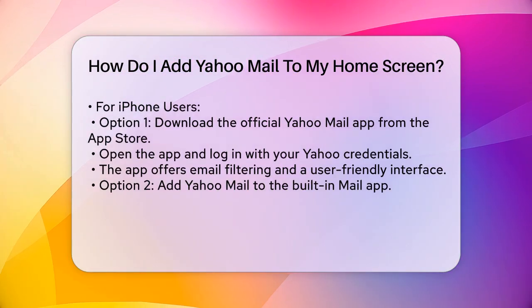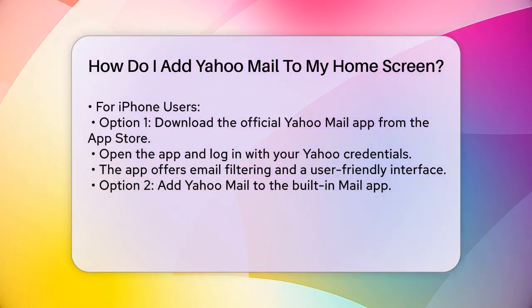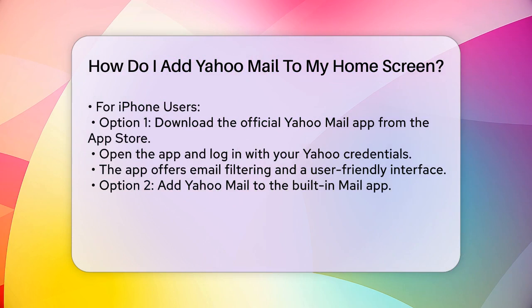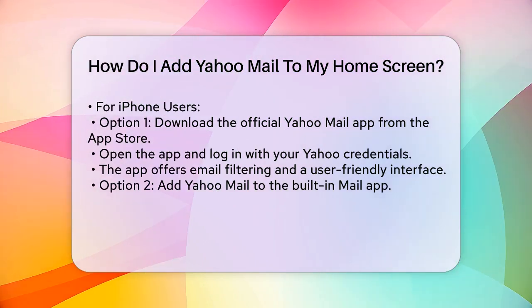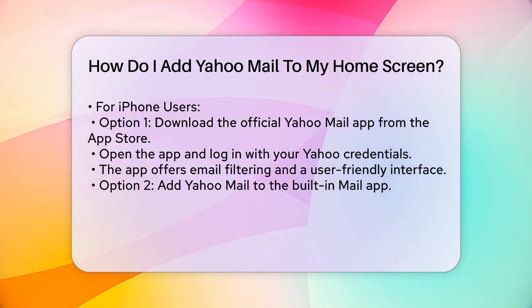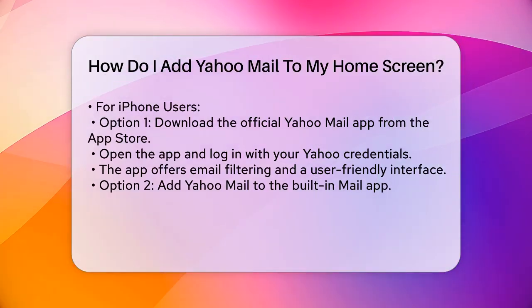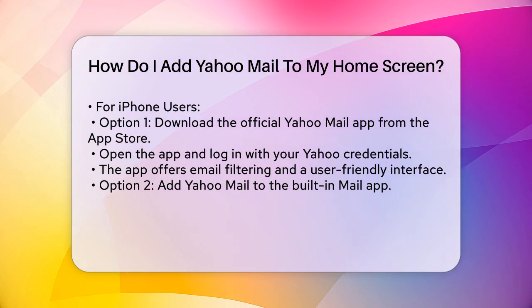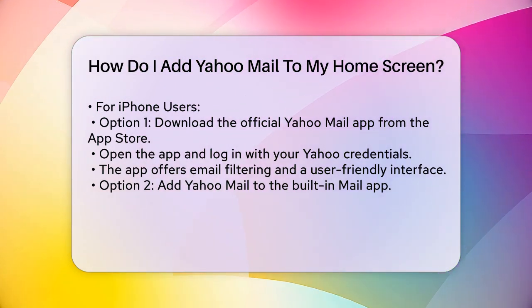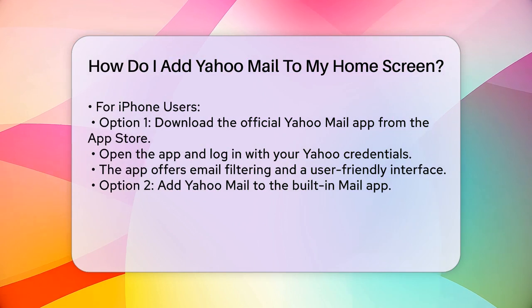For iPhone users, if you're using an iPhone, you have two convenient ways to add Yahoo Mail to your home screen. First, you can download the official Yahoo Mail app from the App Store. Once installed, open the app and log in with your Yahoo username or email address and password. This app allows you to automatically filter your emails and provides a user-friendly interface optimized for your iPhone.